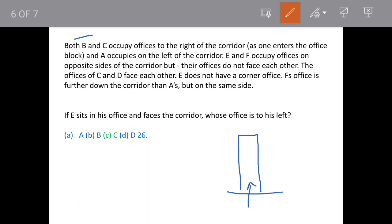The question says B and C occupy offices to the right of the corridor. So let us say this side is right and this is left as we are facing it. So B and C are here. Then it says A is on the left side of the corridor, so A is here.